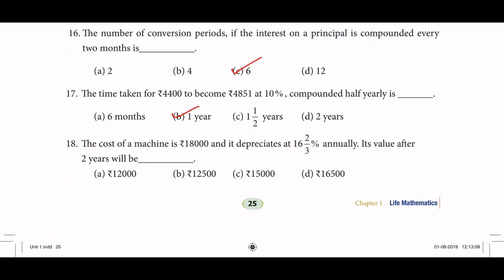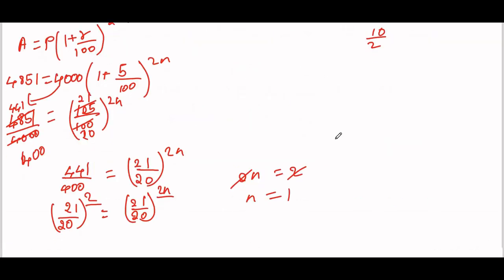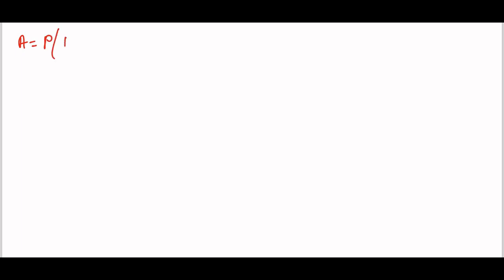The cost of a machine is ₹18,000 and it depreciates at 16⅔ percent annually. Its value after 2 years will be calculated. This is a depreciation problem. Amount equals P into 1 minus R divided by 100, the whole power of N. Principal is 18,000, and rate is 50 percent.